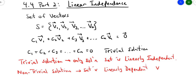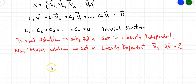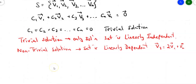For example, if vector 3 is 2 times vector 1 plus vector 2, then those vectors are linearly dependent. Vector 3 depends on vector 1 and vector 2. If you go back to the example with the i's, j's, and k's, those are linearly independent. You can't write any of those three vectors as a linear combination of the other.